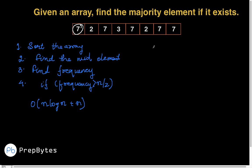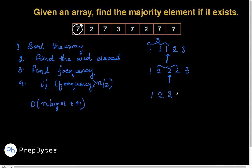Let's check test cases. For [1,1,1,2,3], the mid element is 1 and its frequency is 3, so 1 is the majority element. For [1,2,2,2,3], the mid element is 2 with frequency 3, so 2 is the majority element. For [1,2,2,3,3] with five elements, n/2 is 2, so we need frequency at least 3; the mid element is 2 with frequency only 2, so there is no majority element.